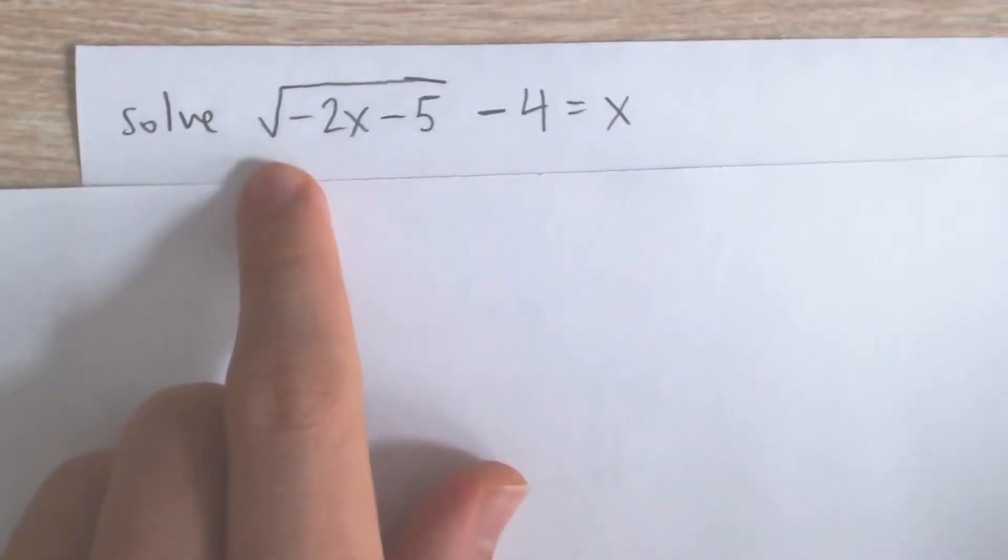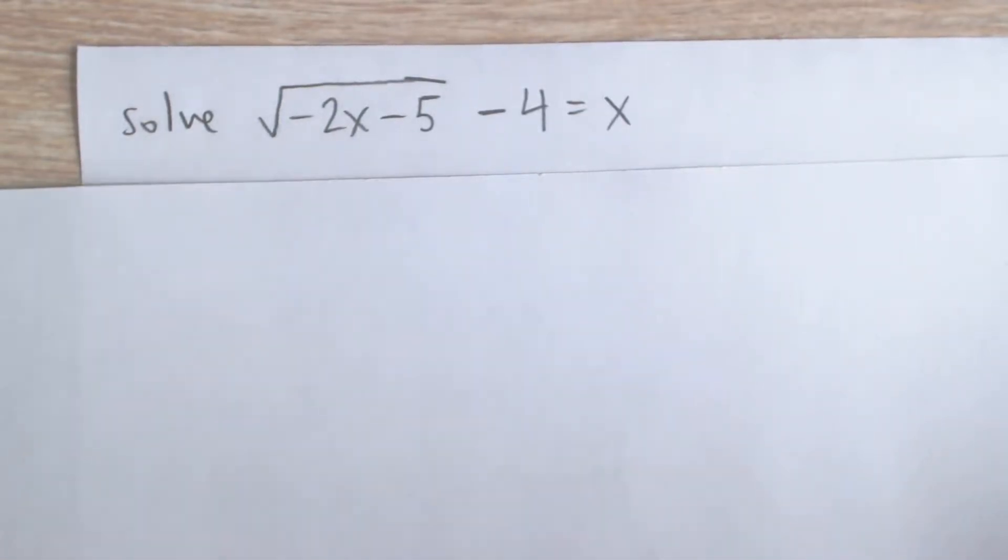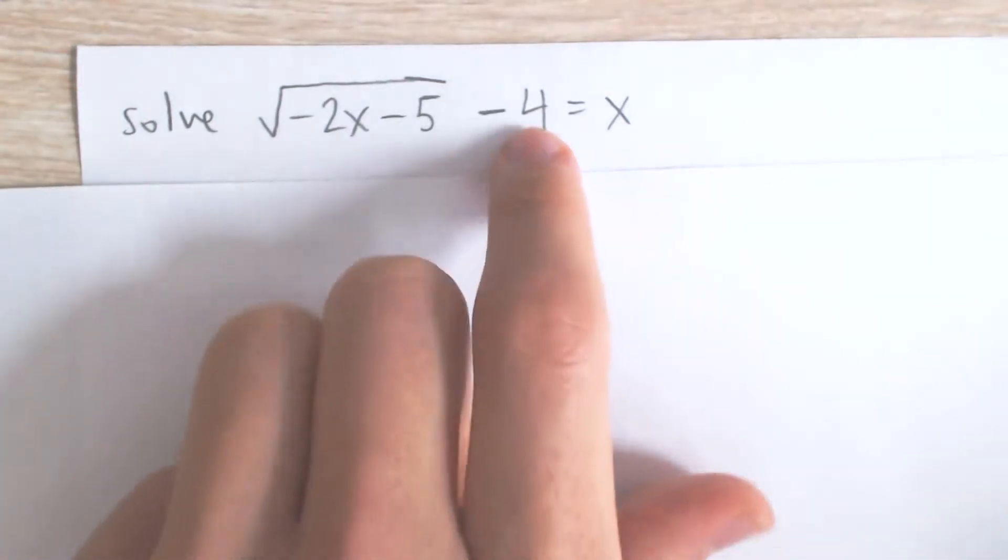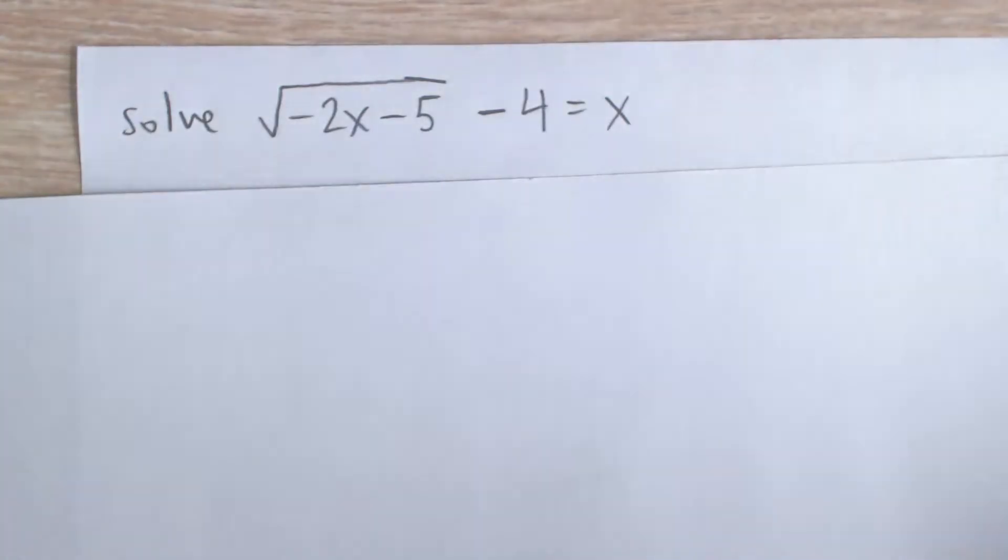Okay, so here we have to solve this radical equation: square root of negative 2x minus 5, minus 4, equals x. The negative 4 is outside the radical sign.